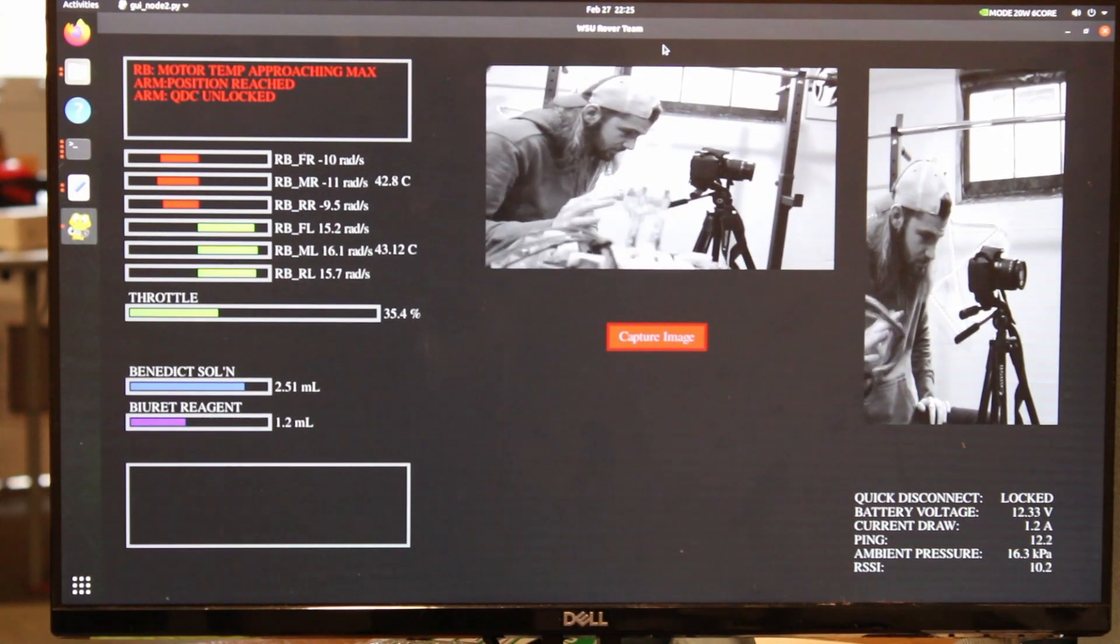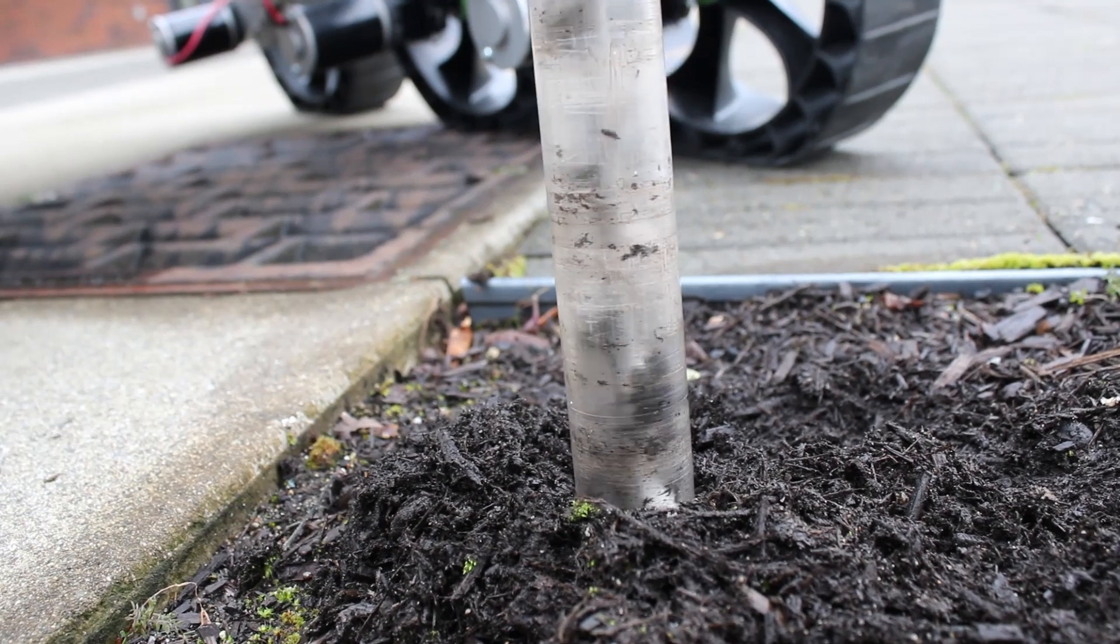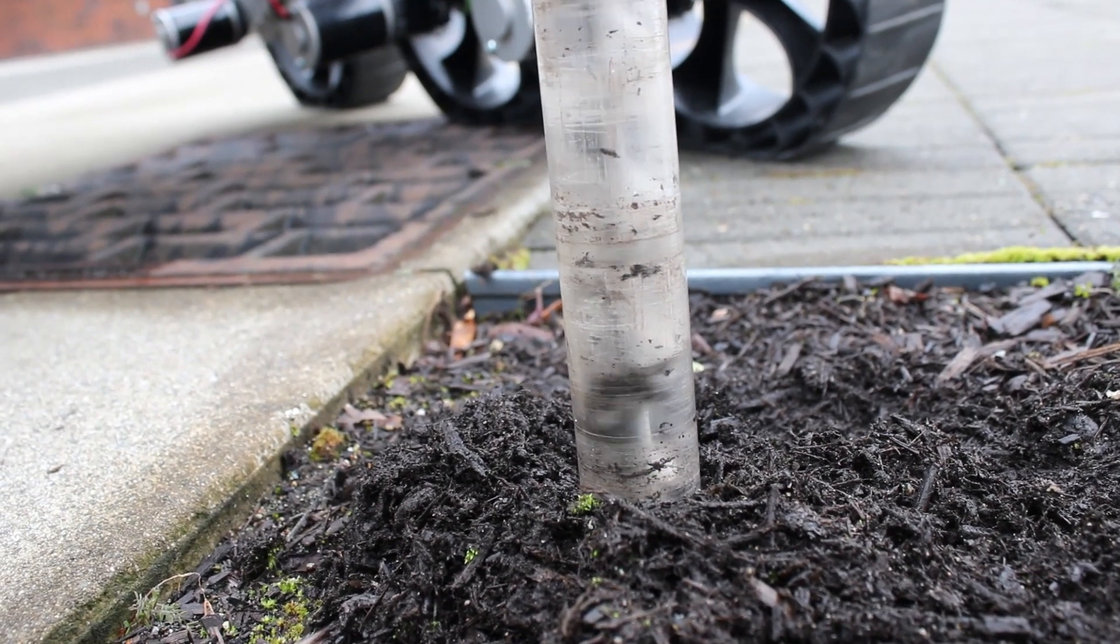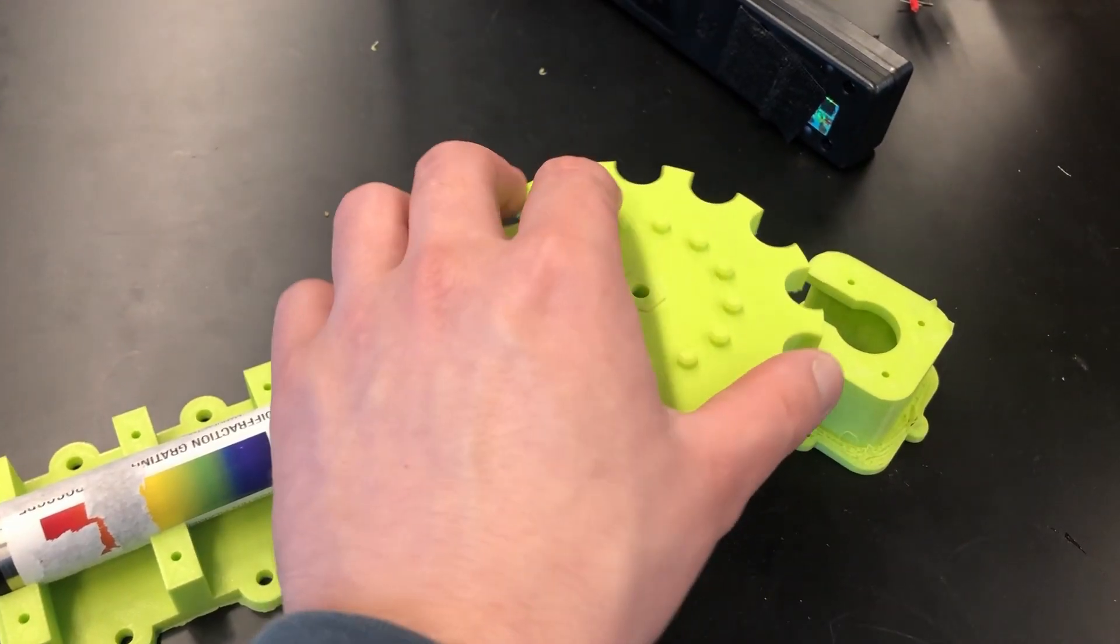In order to carry out the science mission, our rover can be equipped with an auger that will dig samples out of the ground. These samples can be placed in a funnel which leads into our science module.